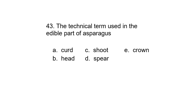Question 43. The technical term used for the edible part of asparagus: A. Curd, B. Head, C. Shoot, D. Spear, or E. Crown. Correct answer is spear.